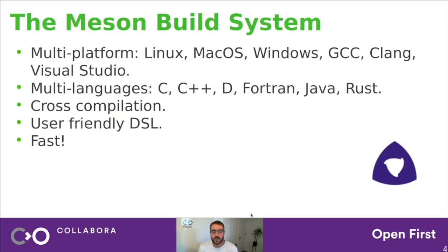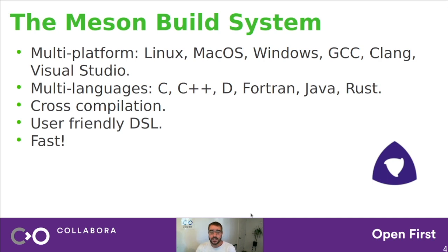First, what is Meson? It's a build system that runs on multiple platforms including Linux, macOS, and Windows. It can also use Visual Studio. It supports multiple languages like C and C++, and it is written in Python. It supports cross-compilation, so you can cross-compile your project for an embedded device, Android device, or anything. It's user-friendly — the syntax is really easy to understand and read. And last but not least, it's fast. One of the main goals is to have a fast build system, and to do that, Meson generates Ninja build instructions. Ninja is really fast to compile all the project and only recompile the parts that need it.